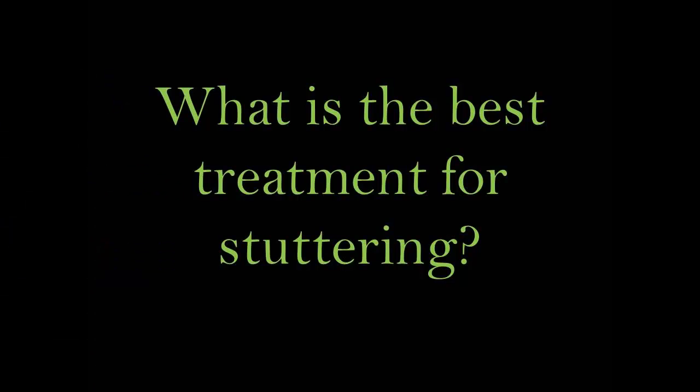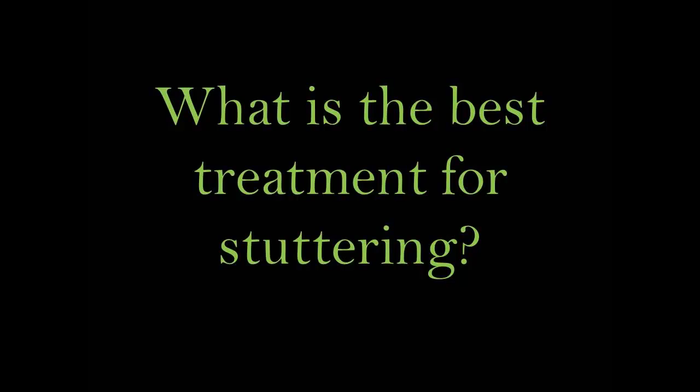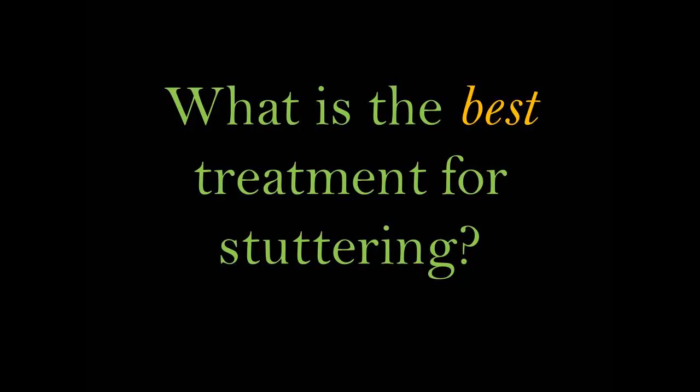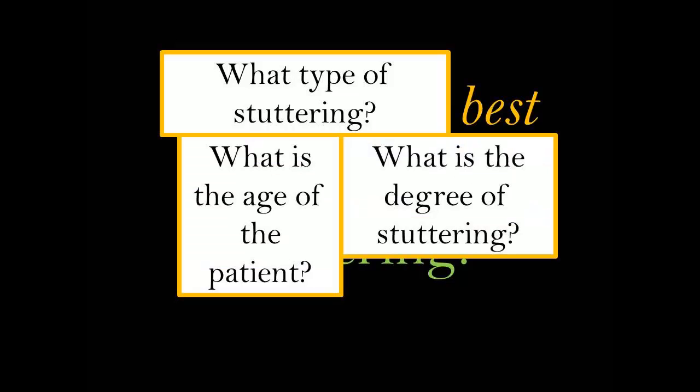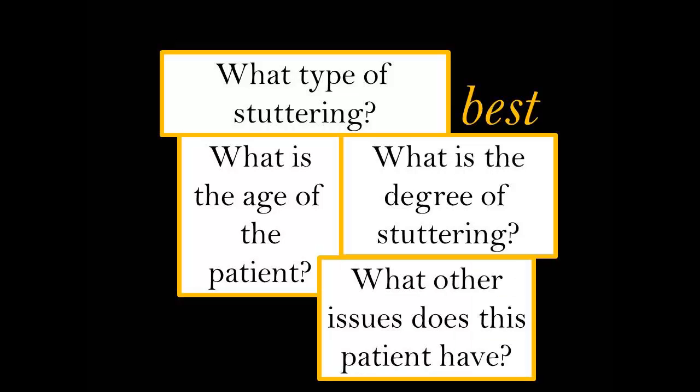But what of this question: What is the best way to treat stuttering? Is this really a question that science cannot answer? The word 'best' is what makes this question unanswerable by science — it makes a value judgment. This question is also too general. What type of stuttering is in question? To what degree is the stuttering? What age group are we talking about? Does the individual have other issues that we need to know about?